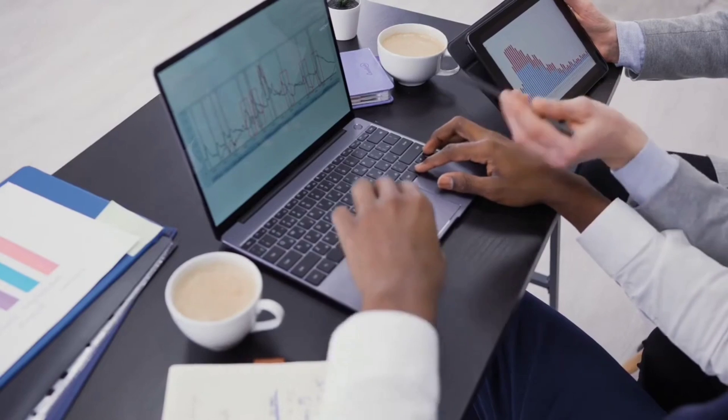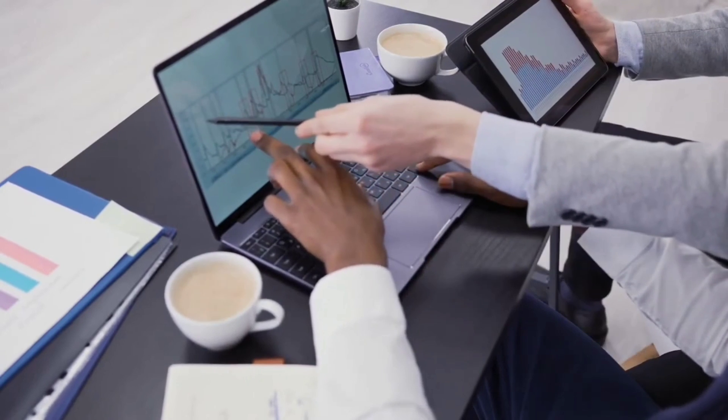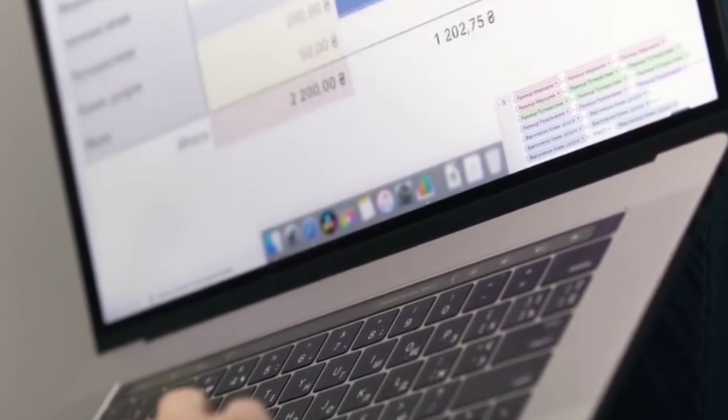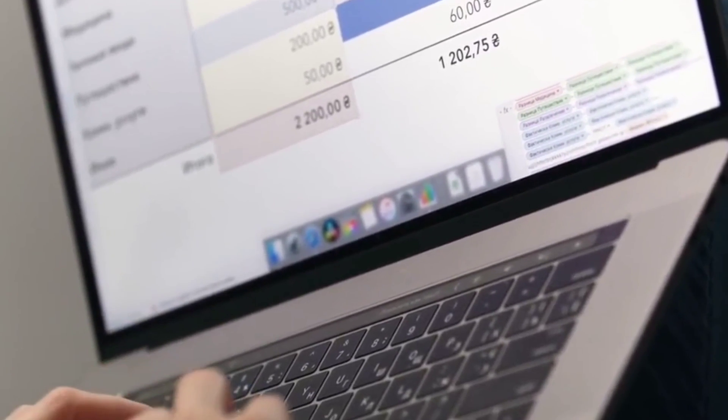You may even automate this process so that it's done before the money becomes available to spend. You could set up an automatic transfer from your checking account to a savings account. If your employer uses direct deposit for your paycheck, you may choose to split the deposit, with a portion of your paycheck going directly into a savings account and the remainder in your checking account.